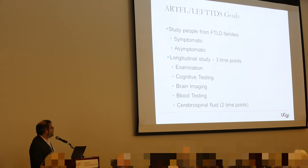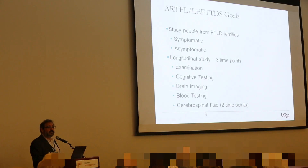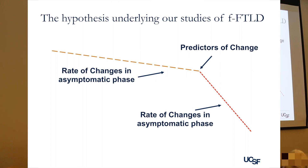We're studying people from these families - both people who already have symptoms and people who don't - and following them over time to see how much change we can detect over a period of three or four years. We have three in-person time points where we examine them: cognitive testing, brain imaging, and blood testing. Many of you are familiar with these protocols. We're trying to characterize the rates of change in the pre-symptomatic phase and the symptomatic phase, and we can guarantee we'll be able to accomplish those tasks.